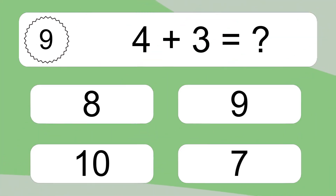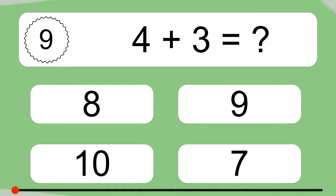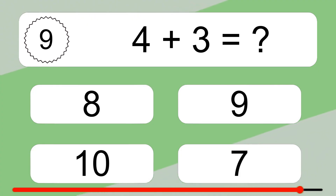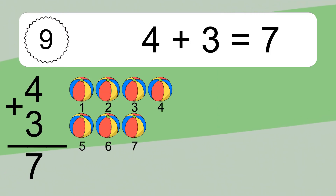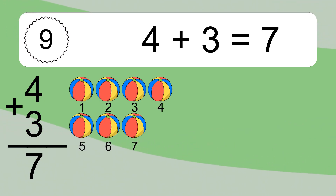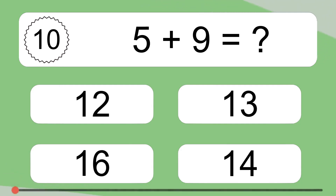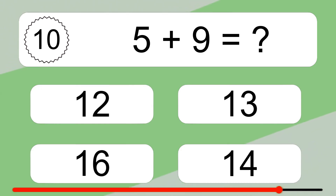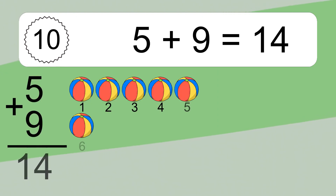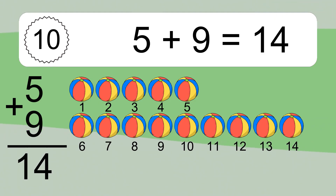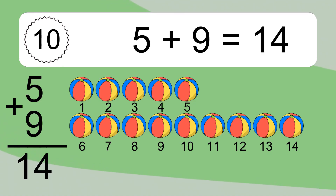4 plus 3 equals what? 4 plus 3 equals 7. Let's count it: 1, 2, 3, 4, 5, 6, 7. 5 plus 9 equals what? 5 plus 9 equals 14. Let's count it: 1, 2, 3, 4, 5, 6, 7, 8, 9, 10, 11, 12, 13, 14.